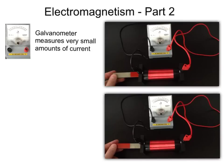Electromagnetism Part 2. In class, we utilized a galvanometer, which is used to measure very small amounts of current. That is, when the needle moves a little bit, there's a little bit of current flowing.